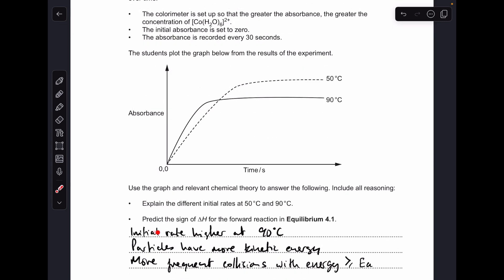So we just need to say something like this: initial rate is higher at 90°C. Particles have got more kinetic energy and so there are more frequent collisions with energy greater than or equal to the activation energy.